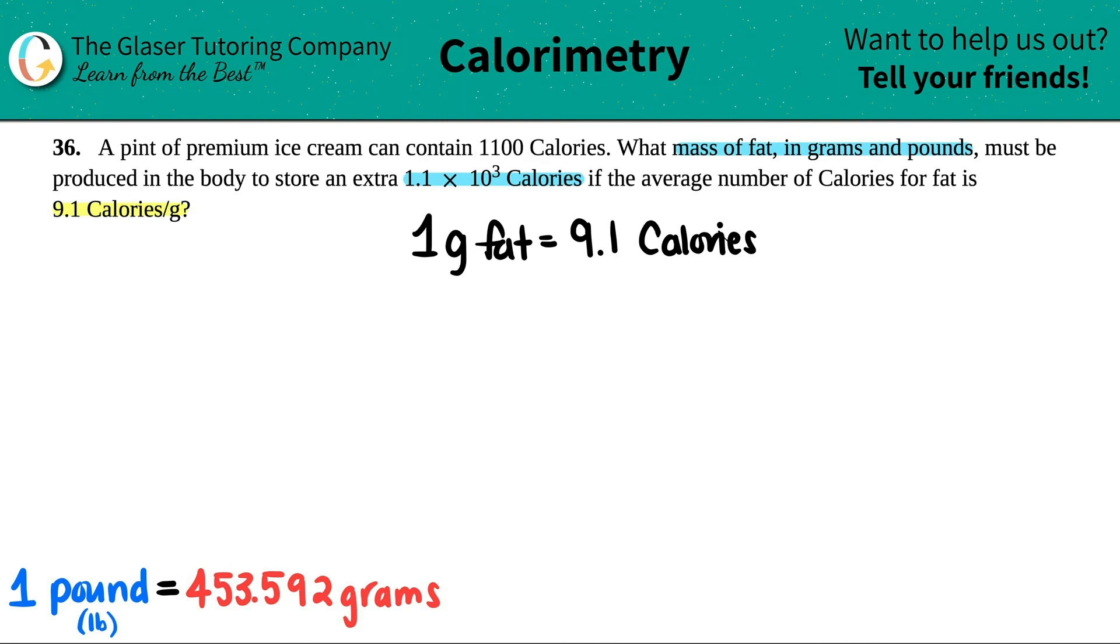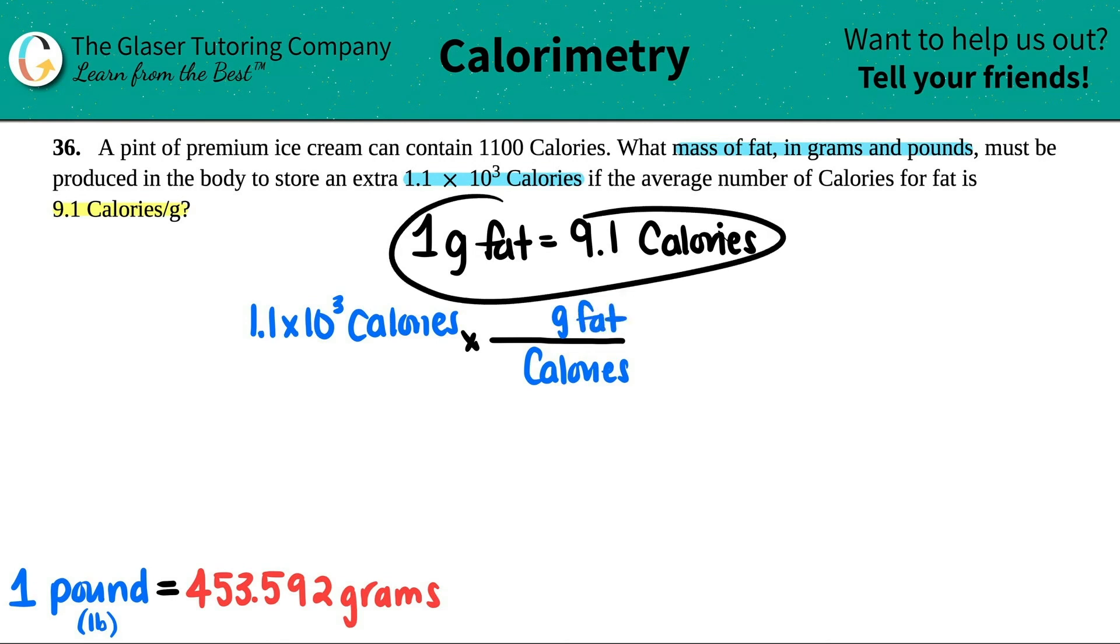Let's start with what we're given: 1.1 times 10 to the third calories. Using dimensional analysis, we're just converting times by a ratio. Calories on the bottom and grams of fat on the top. For every one gram of fat that's metabolized and ingested, the body will produce 9.1 calories. Cancel out the calories, so we're dividing by 9.1.